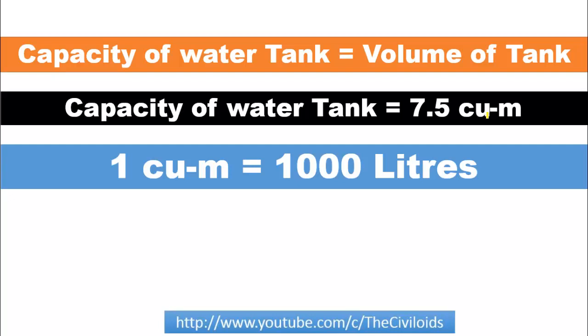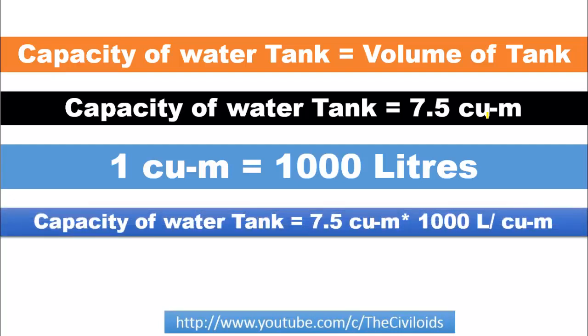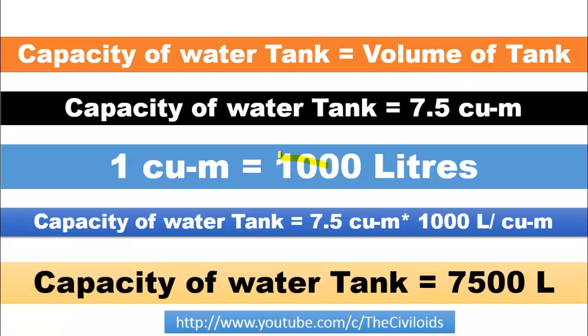Now to find the capacity of water tank in liters, just multiply this 7.5 by 1000 liters per cubic meter, because 1 cubic meter equals 1000 liters. After simple calculation, we will get the capacity of water tank is 7500 liters. So you can see that we have determined the capacity of the given water tank which is 7500 liters.